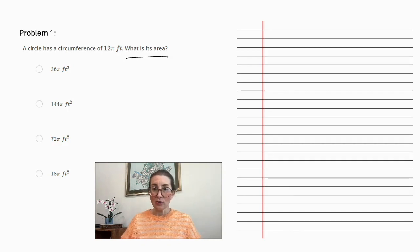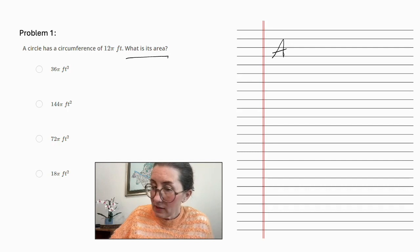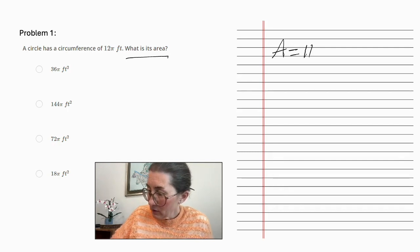In order to find the answer to this question, we require two formulas. One to find the area of a circle, which is π times radius squared.